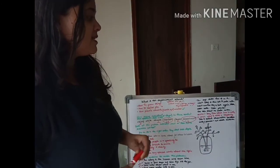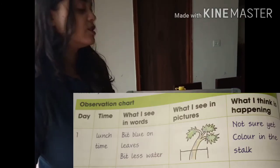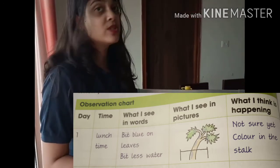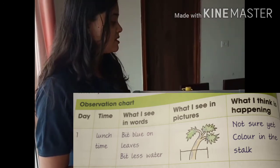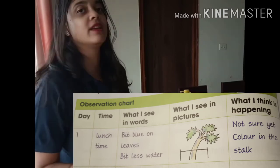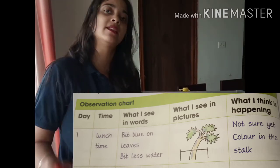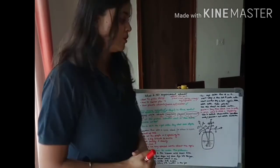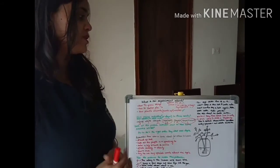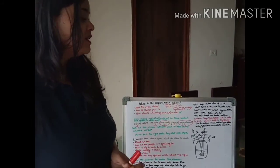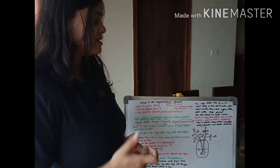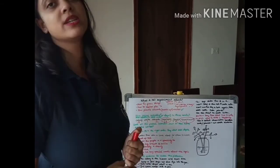Write the day, the time, what you see in words, what you see in pictures, and what you think is happening — in a chart or diagram like the one given below. This is called observation. Jot down the observations in words and phrases, not whole sentences.